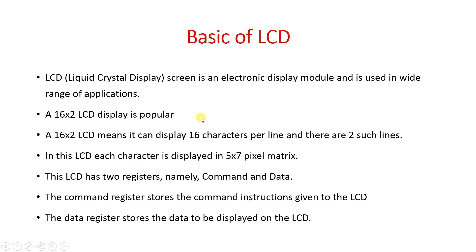The 16 by 2 LCD is very popular worldwide and widely available. It can display 16 characters per line across two lines. Each character is made up of a 5 by 7 pixel matrix — five columns and seven rows. This LCD is easy to interface with a microcontroller because it has an on-chip LCD controller. You are not interfacing directly with the screen, but with the controller, which passes your data on to the LCD screen.